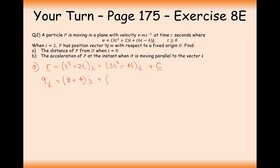The final position vector is r equals (t cubed + 2t − 12)i plus (3t squared minus 4t + 5)j. Substituting t equals 0 gives the position vector as minus 12i plus 5j. To find the distance from O, we calculate the magnitude: square root of (minus 12 squared plus 5 squared) equals 13 metres.